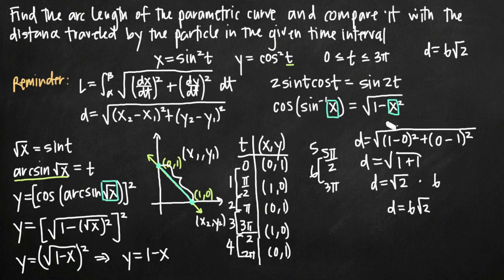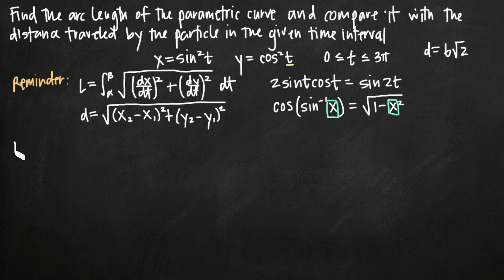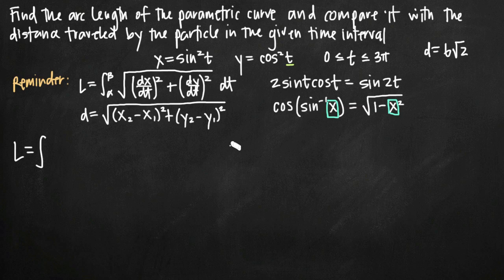Now we want to compare that with the arc length formula for L. We set up L as the integral from alpha to beta, but rather than using 0 to 3 pi, we use the interval from 0 to pi over 2 — since the particle traverses one segment in each interval of pi over 2 — and then multiply the result by 6, because the particle traverses that distance six times total.